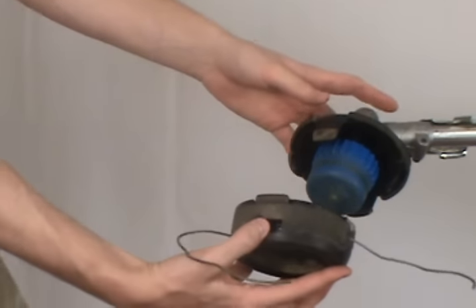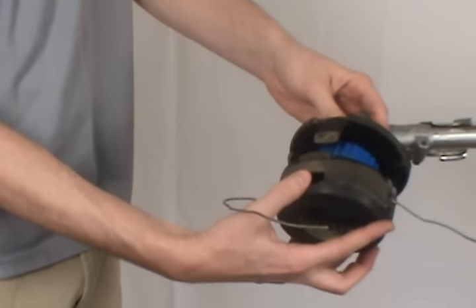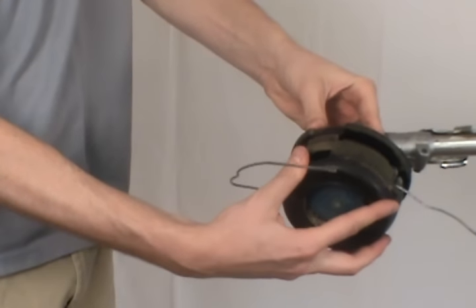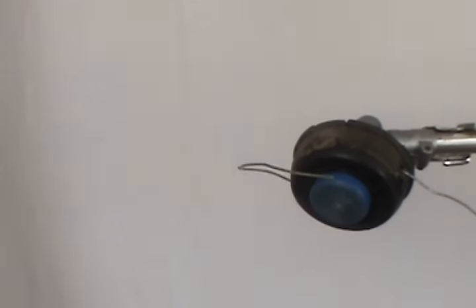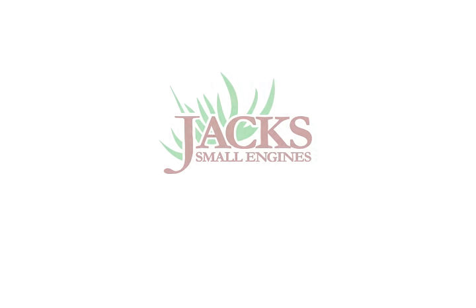And finally, insert it back onto your trimmer, making sure the tabs lock in place. And that's how to install a new trimmer line on a Husqvarna string trimmer.